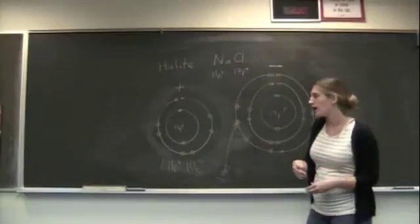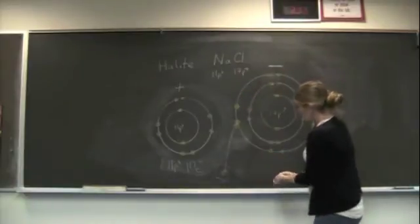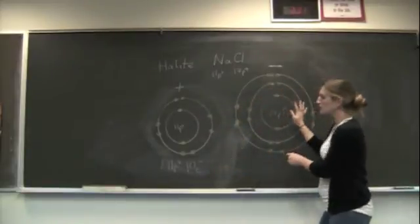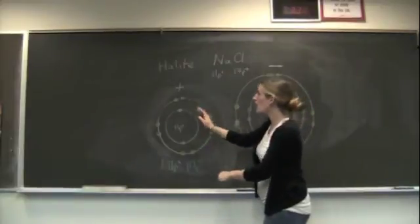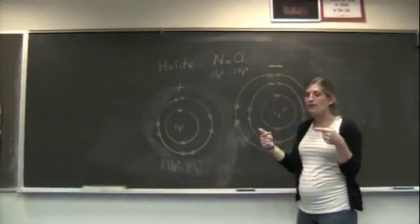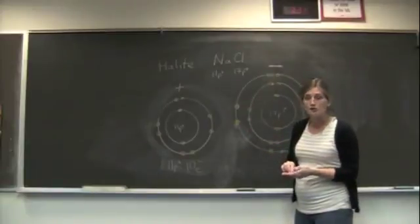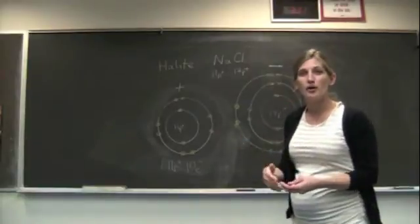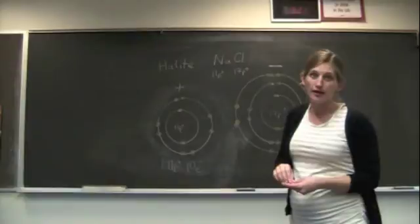We're going to call it an ion. Any charged atom is an ion. And when we look at this, this chlorine, which is now negatively charged, is going to be attracted to the sodium, which is positively charged. And they're going to join together, and they're going to stick together just by those charges. And they're going to hang out, creating a new compound that we call sodium chloride, or in the case for geology, this is the mineral halite.